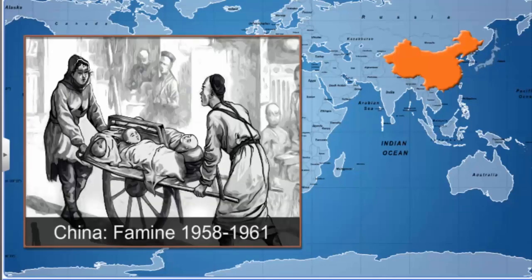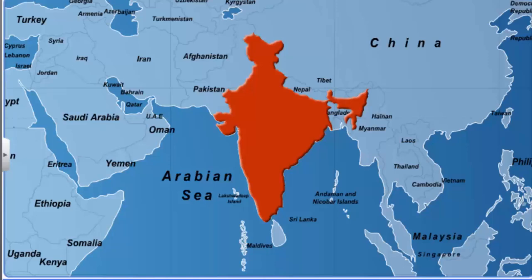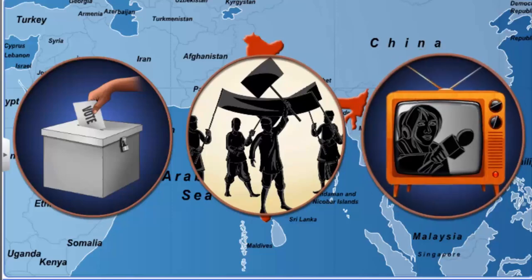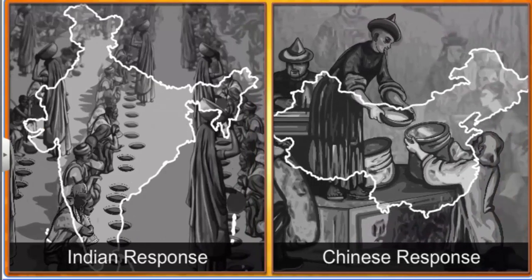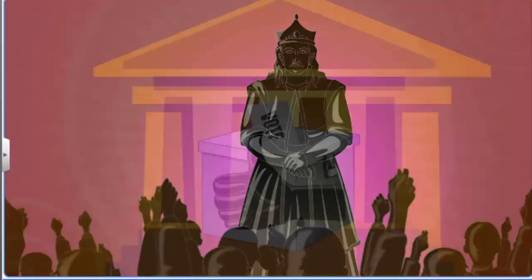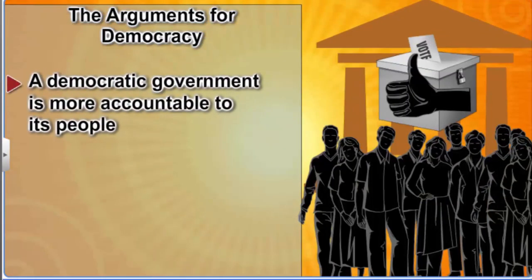China recorded the worst famine in world history from 1958 to 1961, with a toll of more than 3 crore, whereas India, despite worse economic conditions, did not have such an acute famine. Economists think this was because India, being a democracy, had multi-party elections, an opposition party watching the government, and a press free to criticize the government. Therefore, the Indian government responded to food scarcity very differently from the Chinese government. In a non-democracy, rulers may or may not respond to the needs of the people — thus, a democratic government is more accountable to its people.